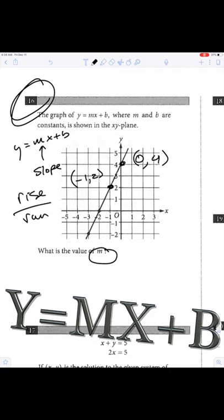How much did we go up on the y? We went up two. How much did we go up in the x? We went from negative one to zero, that's up one. So m equals two.